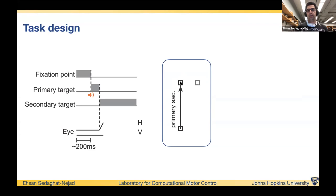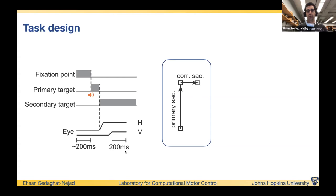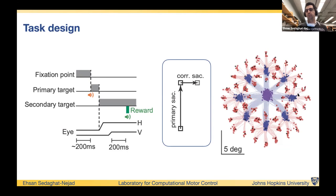When the eye lands, the target is no longer at the expected location — it's at a new location. This is what we call the sensory prediction error, because the monkey predicted the target should be there but it is not. As a result of this secondary jump, the monkey makes a corrective saccade. The monkey's task is to fixate at the secondary location for 200 milliseconds and then receive a reward. Here are the eye trajectories for a sample session showing primary and corrective saccades across eight randomly chosen directions.